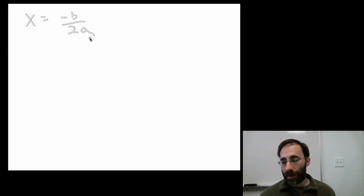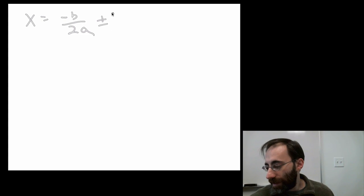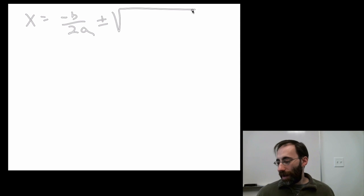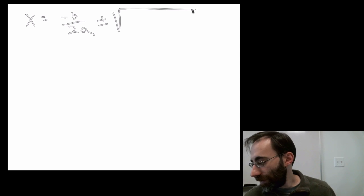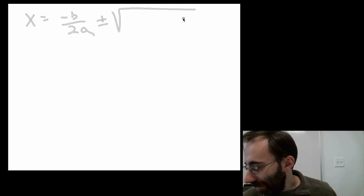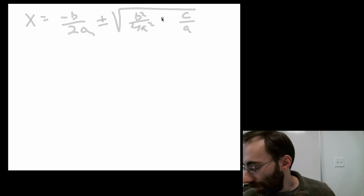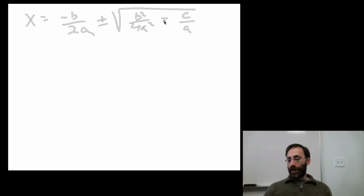Now, start again. Subtract b over 2a from both sides. You get x equals negative b over 2a plus or minus the square root of, I should write this down, of c over a and b squared over 4a squared minus this. Okay. Now, we're almost there actually.